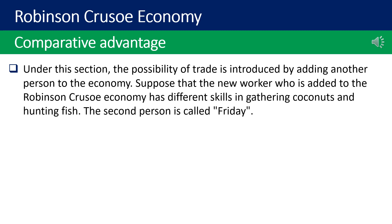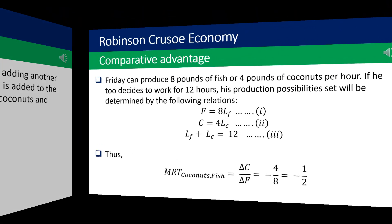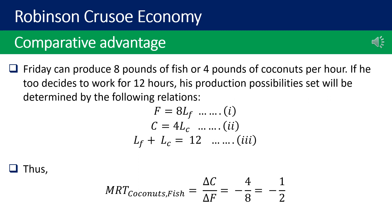Comparative advantage: the possibility of trade is introduced by adding another person to the economy. Suppose the new worker, Friday, has different skills — he can produce 8 pounds of fish or 4 pounds of coconuts per hour. If Friday decides to work 12 hours, his production possibilities set is determined by: F = 8·LF (equation 1), C = 4·LC (equation 2), and LF + LC = 12 (equation 3). Thus, MRT of coconuts for fish equals ΔC/ΔF = −4/8 = −1/2.